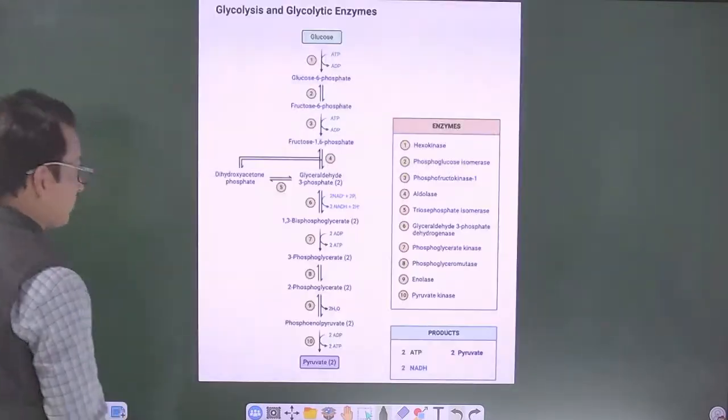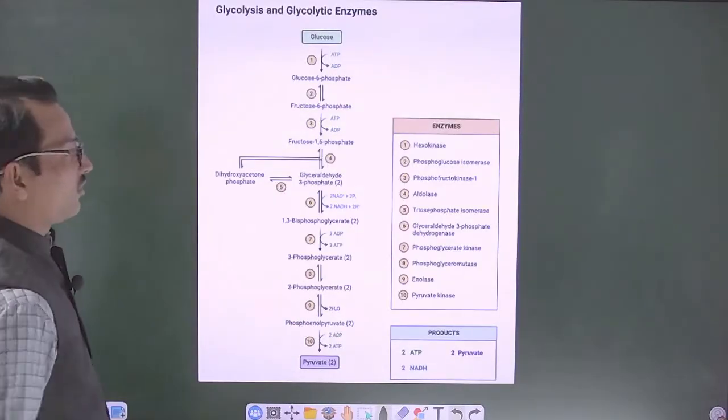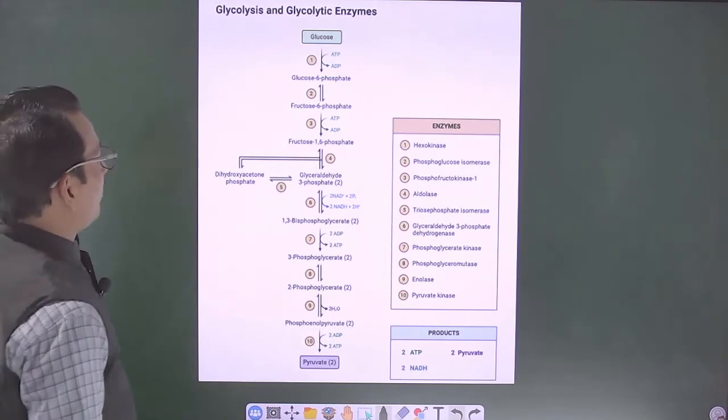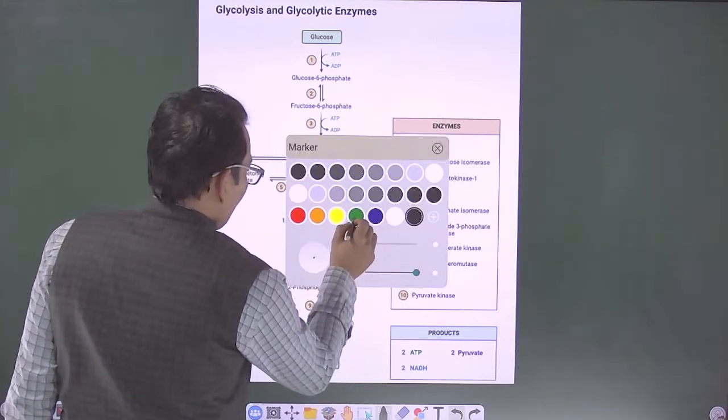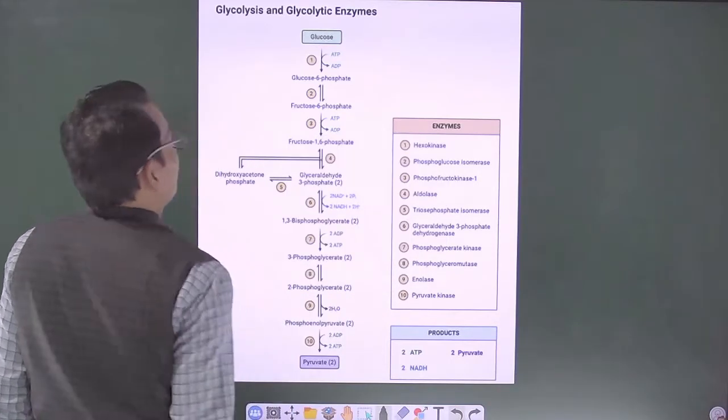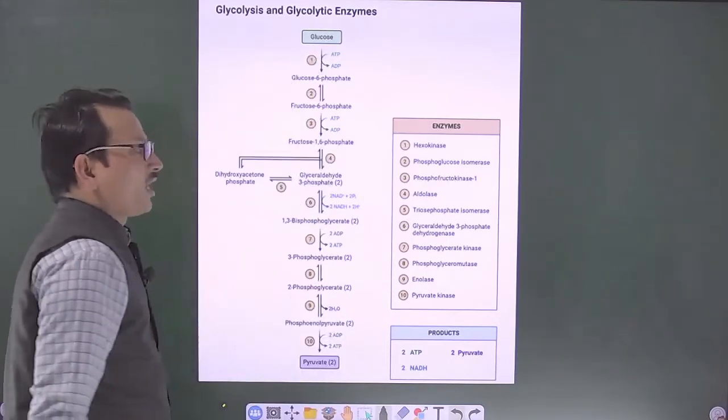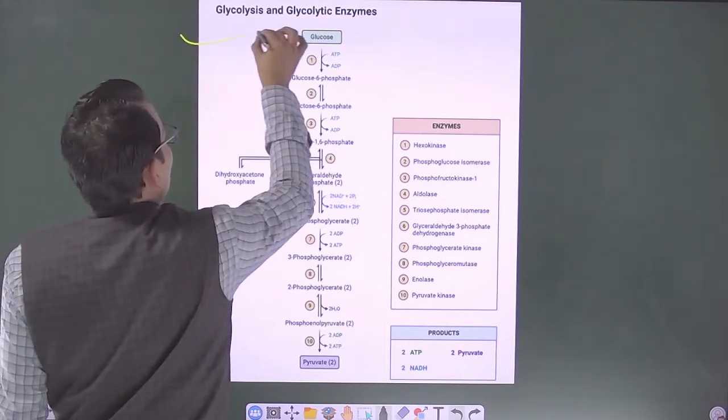See this pathway, you can easily understand the concept as I have already told you that this glucose can be obtained in plants from two sources.